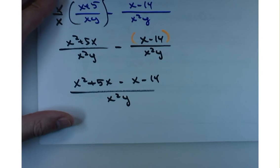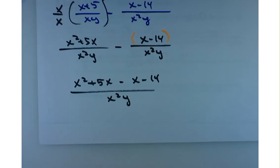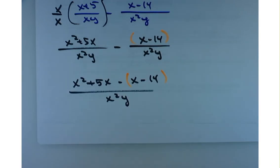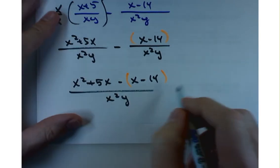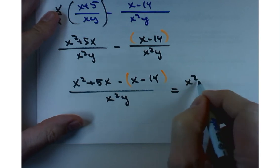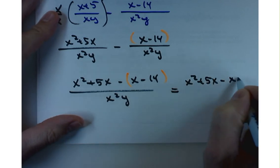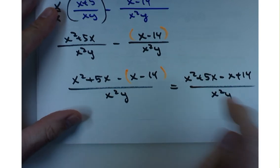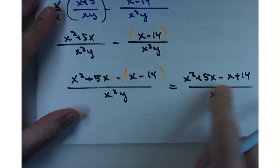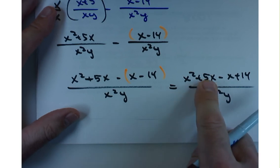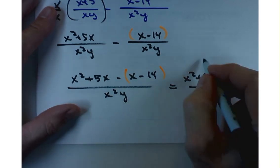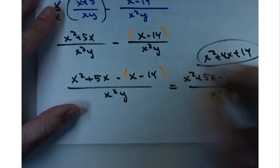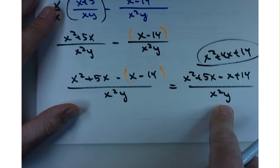Why? Yeah. Is that Cosmo? Yeah, good job. You've got to distribute the negative sign to both of those. So what you really should write is x squared plus 5x minus x plus 14 over your x squared y. And then you can clean this up. 5x minus x. The numerator should be x squared plus 4x plus 14. So that numerator with this denominator. Yay.